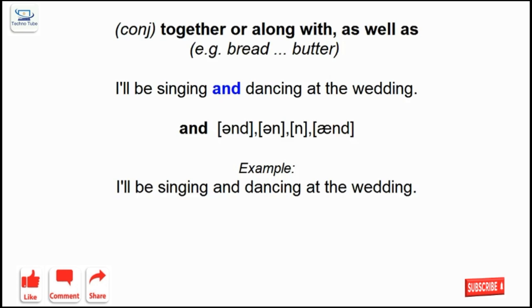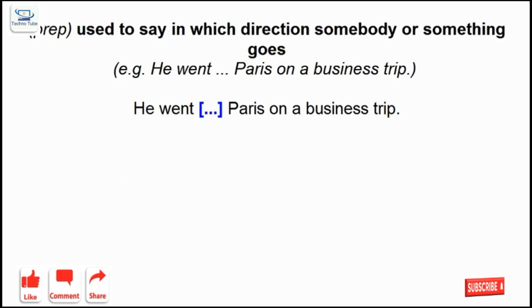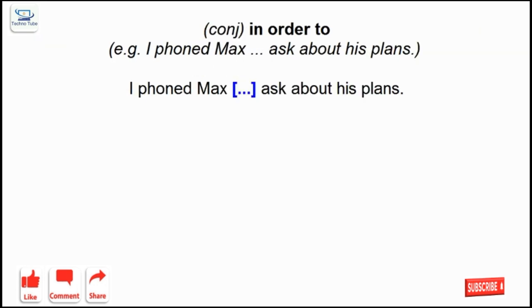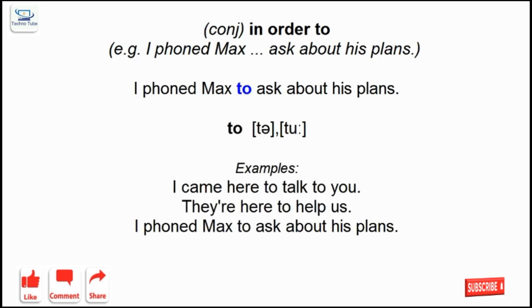And: together or along with; as well as. To: used to say in which direction somebody or something goes. To: in order to.